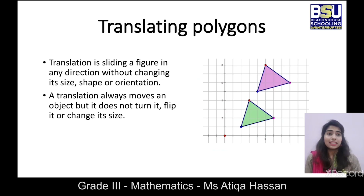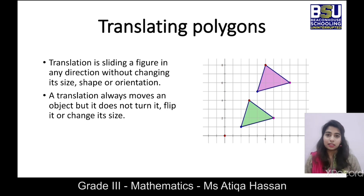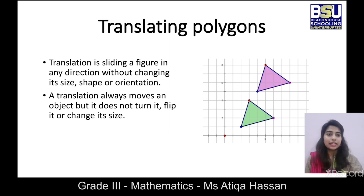Now let's study translating polygons. Translation is sliding a figure in any direction without changing its shape, size, or orientation. For example, when we drag an object from one place to another, it does not change its shape or size — it only changes its position. Translation always moves an object but does not turn it, flip it, or change its size. As shown in the figure, a triangle is translated to the upper right and a new position is formed.